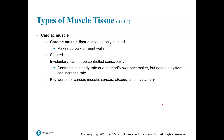For cardiac muscle, you only find it in the heart — it makes up the bulk of the heart walls. Cardiac muscle is also striated but involuntary. The contraction of the heart is steady due to the heart's pacemaker, but the nervous system can control how fast the heart rate speeds up or slows down. Key words for cardiac muscle: striated and involuntary.